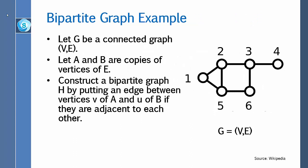Let G be a connected graph where V represents the set of vertices and E represents the set of edges. Let A and B be copies of the vertices of G. Now construct a bipartite graph H by putting an edge between vertex V of A and vertex U of B if they are adjacent to each other in the original graph G.